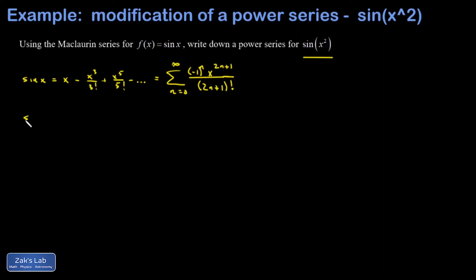Now I just want to modify it a little bit and replace x with x squared. Multiplying the exponents, I get negative one to the n, x to the 4n plus 2 over 2n plus 1 factorial.